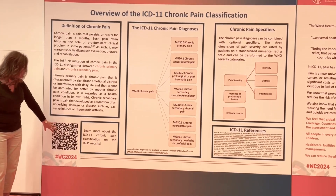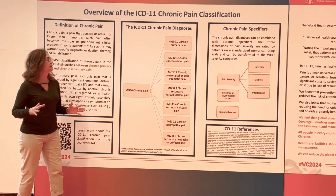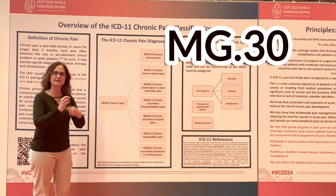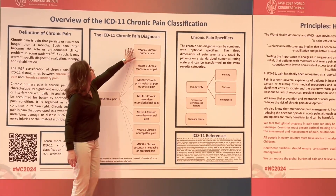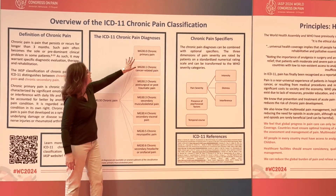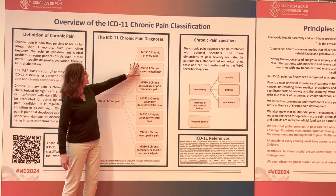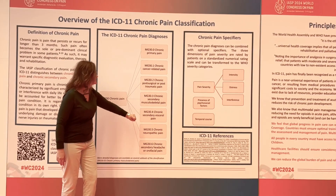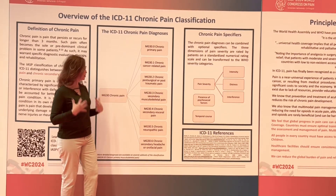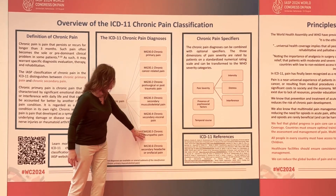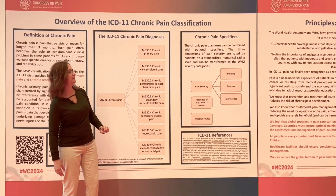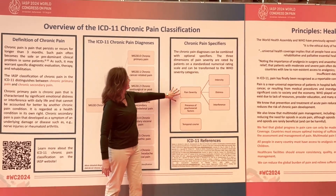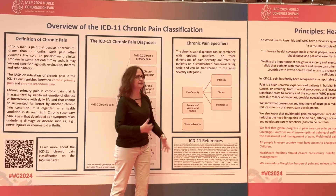Here is a QR code — I'll put the link in the video below for you to learn more about how this was developed. In the classification of diseases, diagnoses come with letters and numbers. Chronic primary pain is coded as MG30. Then we have other types of chronic pain: pain related to cancer, post-surgical or post-traumatic, secondary to a musculoskeletal problem, secondary to visceral organs inside the chest, abdomen, or pelvis, neuropathic pain, and secondary to headache or orofacial pain. The ICD also classifies pain diagnoses with optional specifiers like pain intensity, the presence of psychosocial factors, and the temporal course.